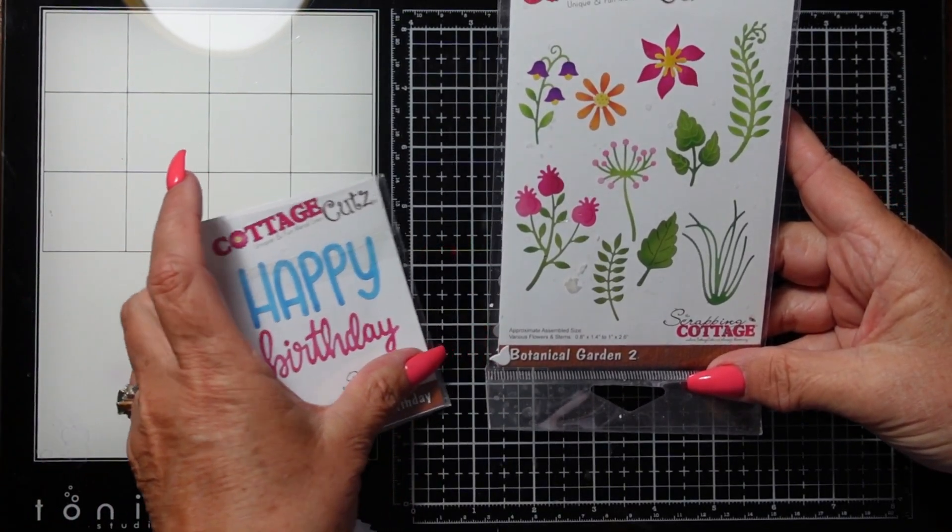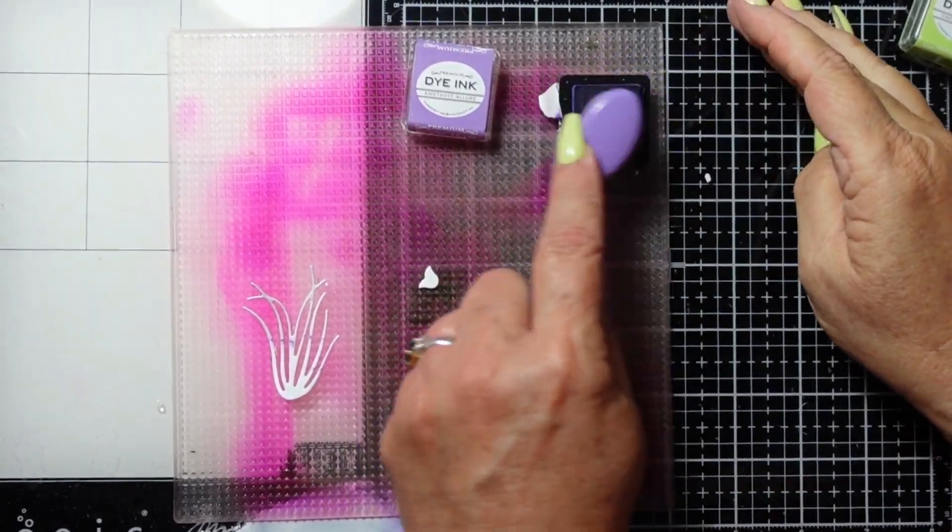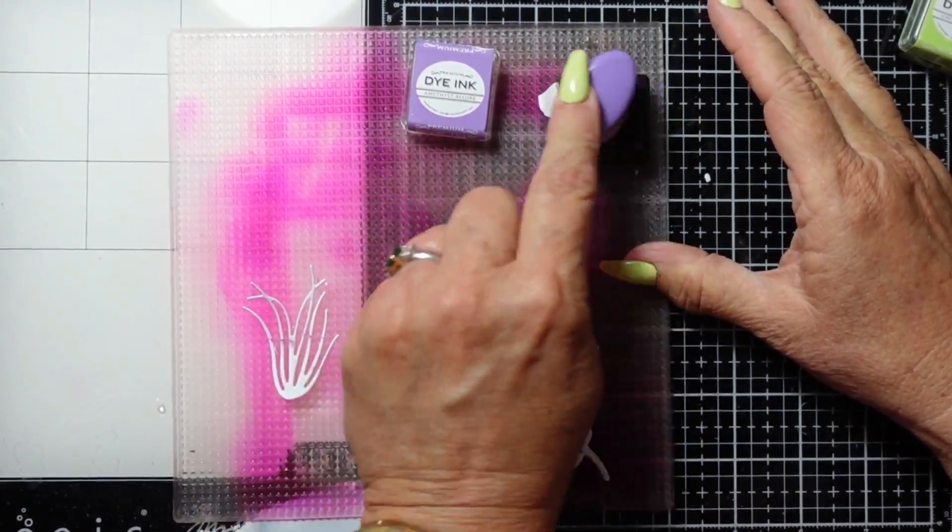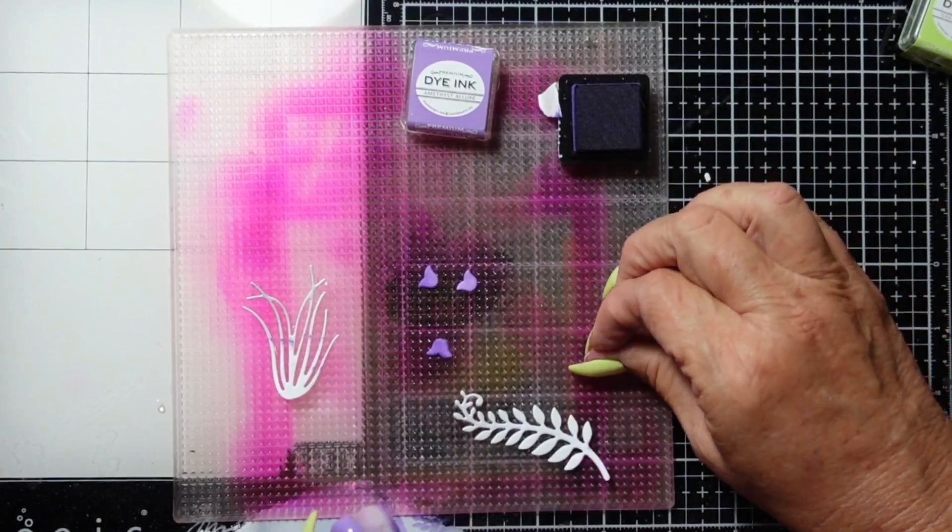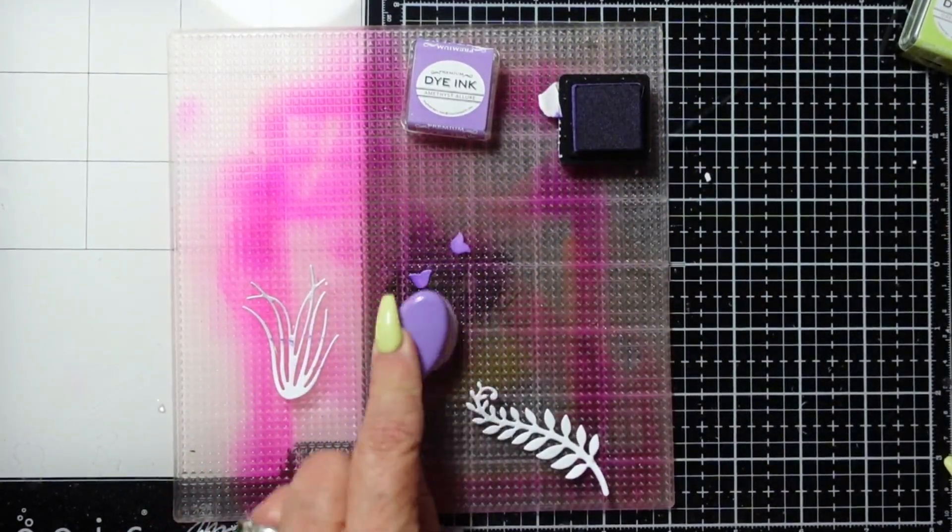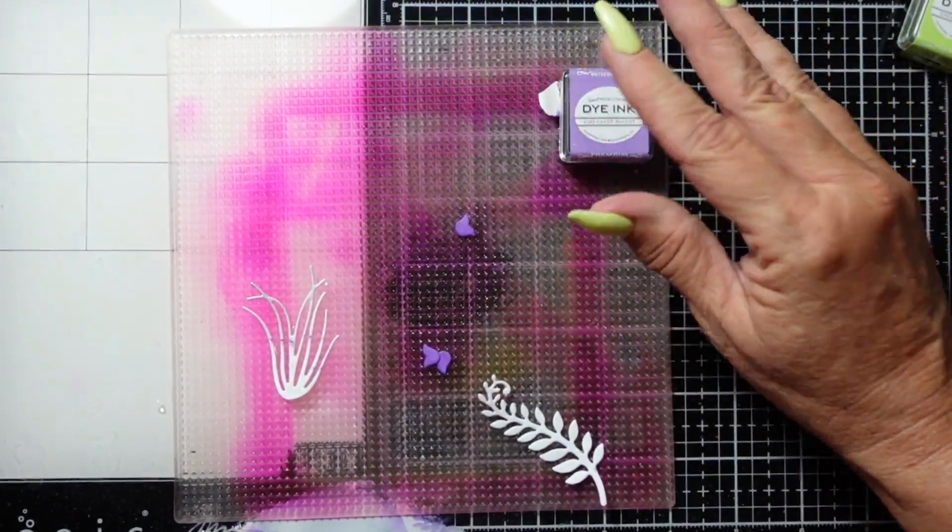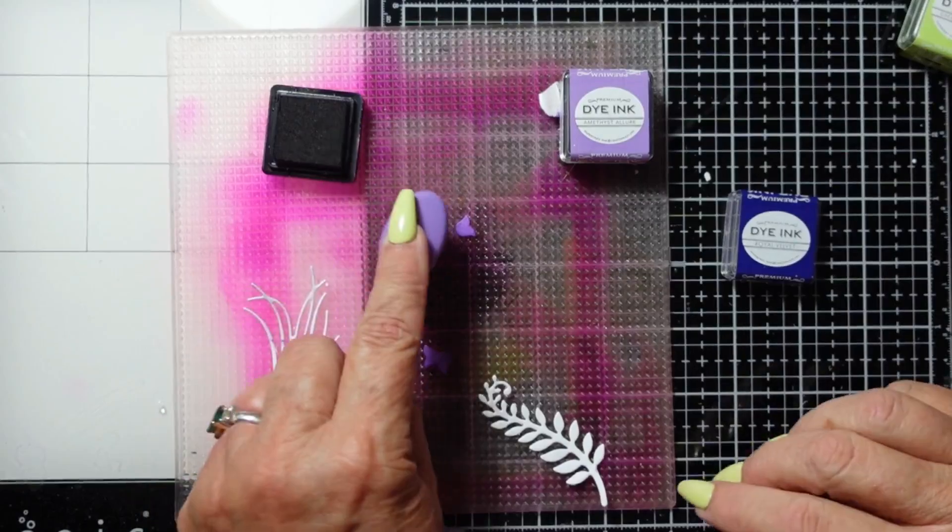You can see there are two different flowers without stems, two with stems, some grassy pieces, and some foliage. Normally I would make this into a swag or wreath or something like that, but I wanted to talk about how overwhelming, especially for fairly new cardmakers, die cuts can be.